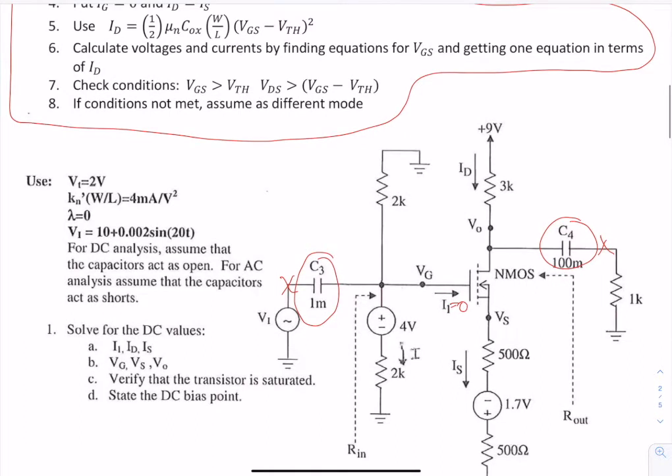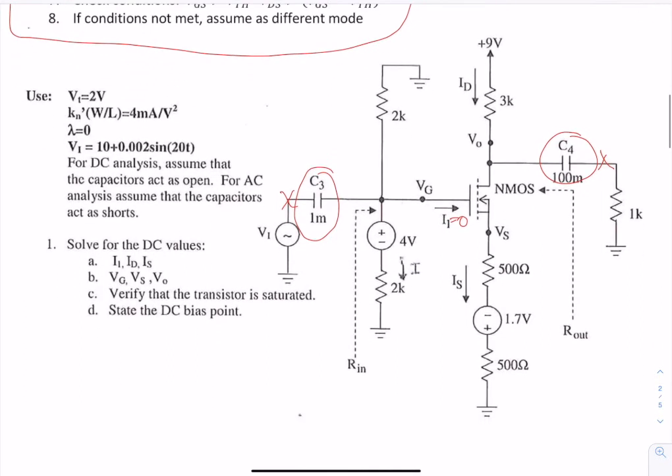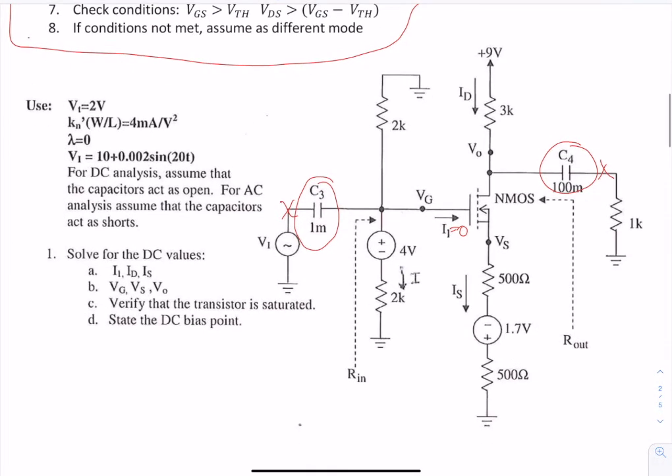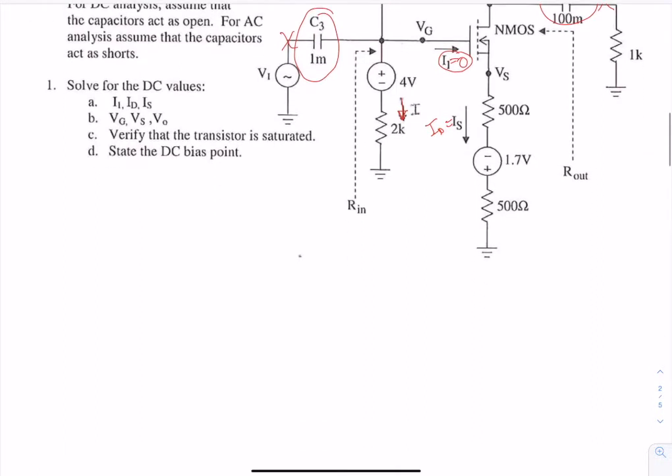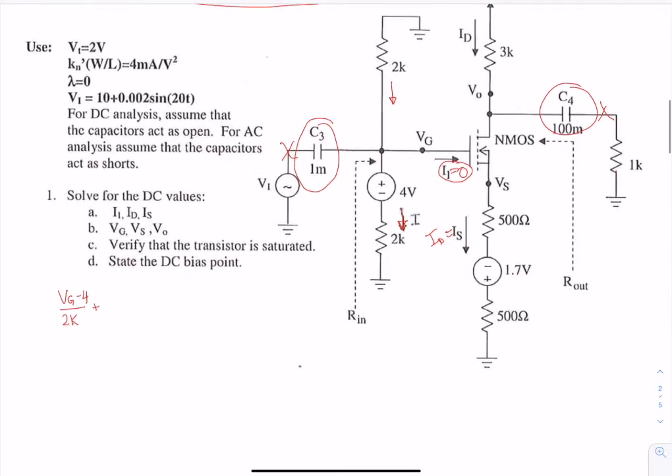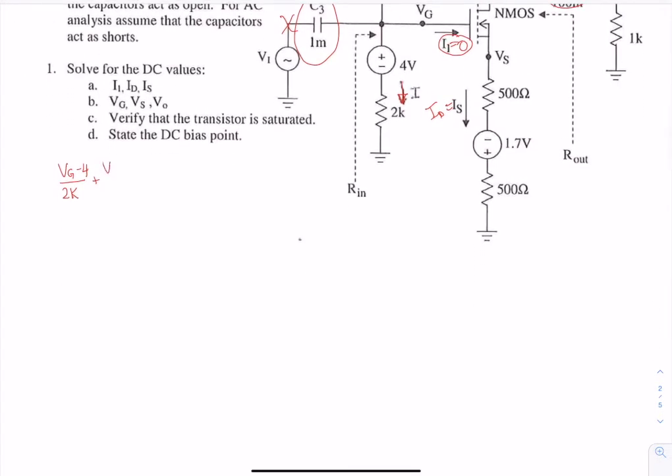We're going to use the equation and then calculate all the voltages and currents and then check the conditions. Without current going through here, we know that all the current through here goes through here, and we can use a node voltage at VG to solve for the gate voltage. So we have VG minus 4 over 2k, and then VG over 2k is equal to 0.